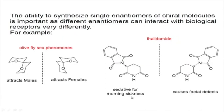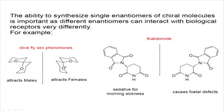Why is asymmetric synthesis important? There are molecules which are artificially made, like sex pheromones - they can attract the opposite partner. But when you take the mirror image of this molecule, one enantiomer attracts males and the other attracts females. So there is only a difference in stereochemistry - this is the mirror image of that one. One enantiomer, if present in the body, causes males to feel an affinity towards the animal secreting that compound, while females have affinity for the animal secreting the other molecule.